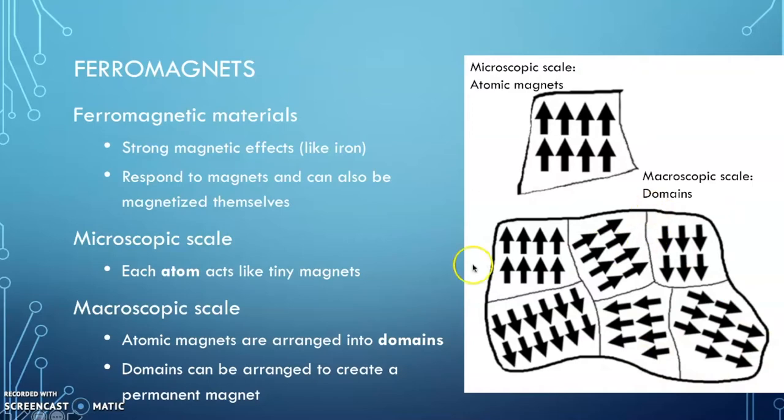So all of these domains can swing around to point in the same direction. And we're going to talk about how we can make that permanent magnet, or let's say this becomes a magnet. It's all going in this direction.